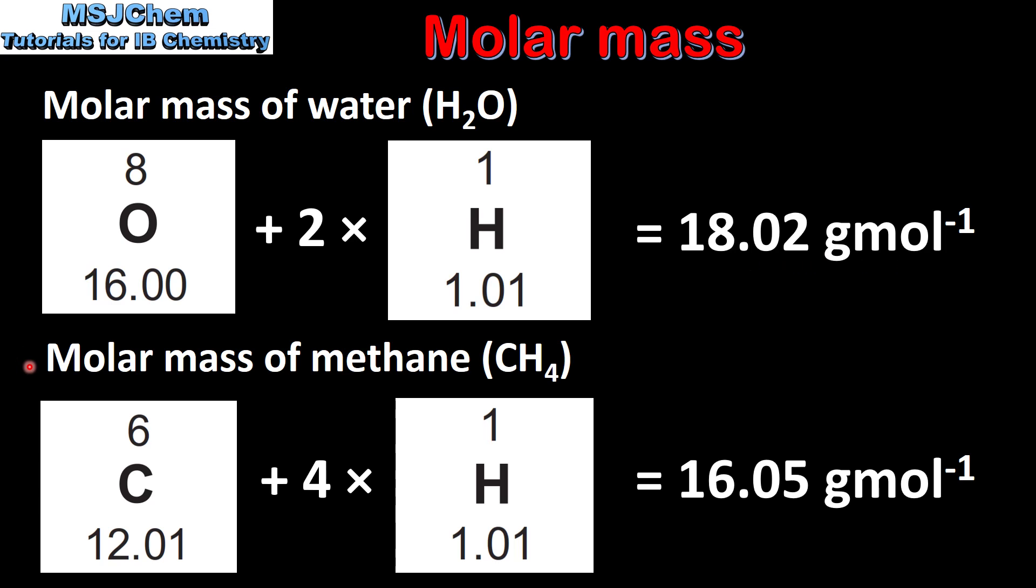Next we'll calculate the molar mass of methane. Methane consists of one carbon atom and four hydrogen atoms. So to find the molar mass we add the relative atomic mass of one carbon atom and four hydrogen atoms, which gives us a molar mass of 16.05 grams per mole.